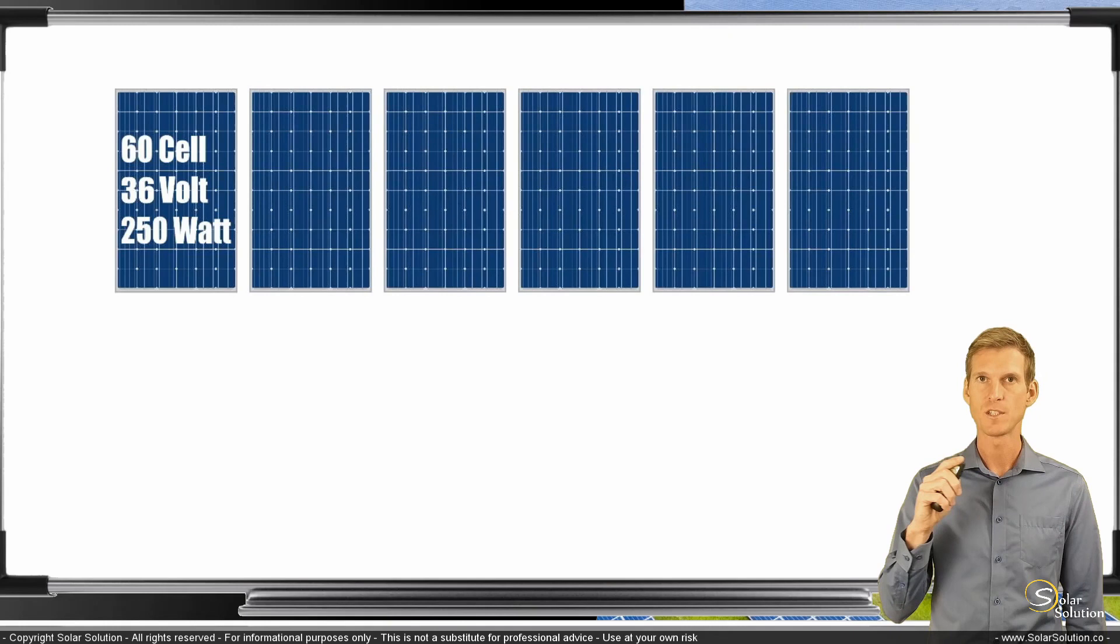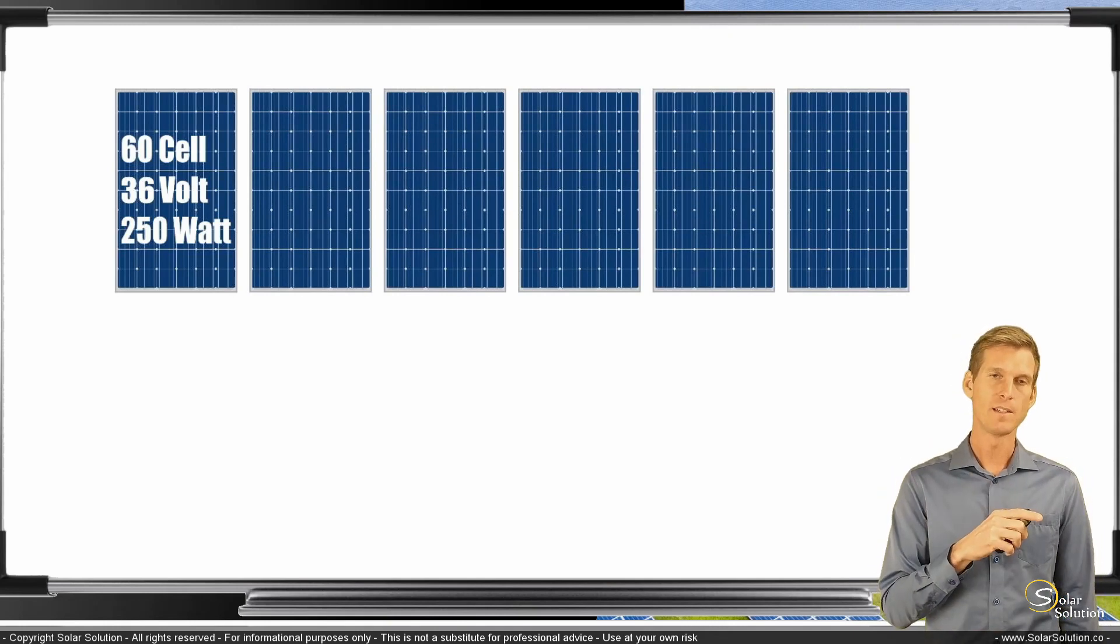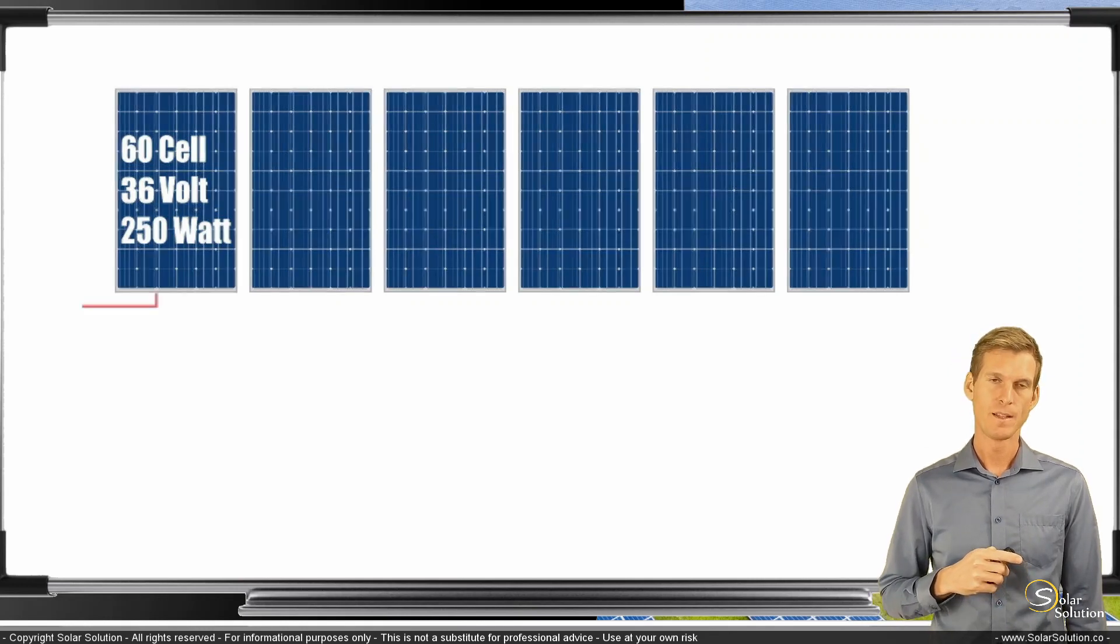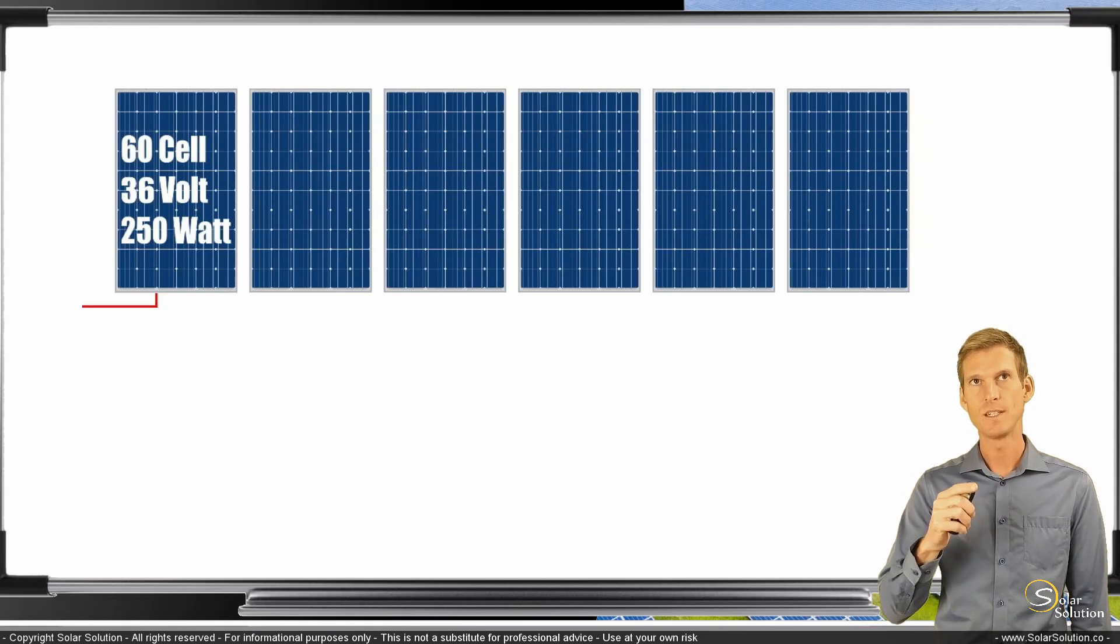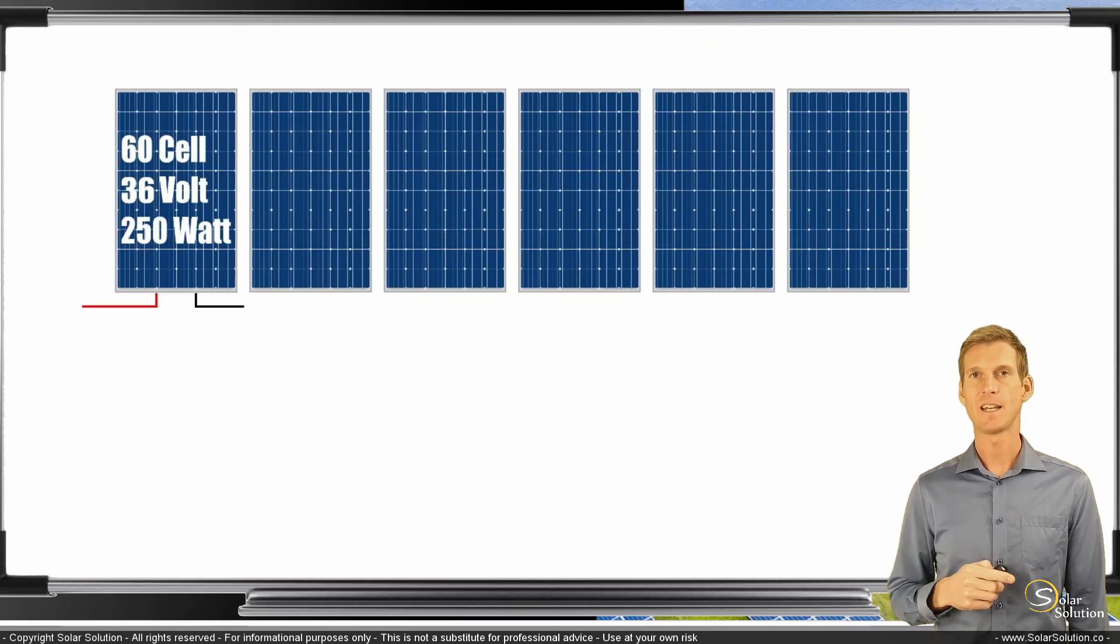We want to make one group of six panels all wired together. Now if we want to wire it together in series, we start with a positive lead from the first panel that goes into the panel and then the panel has a negative lead output, and you connect the negative output from the first panel with the positive output of the second panel.